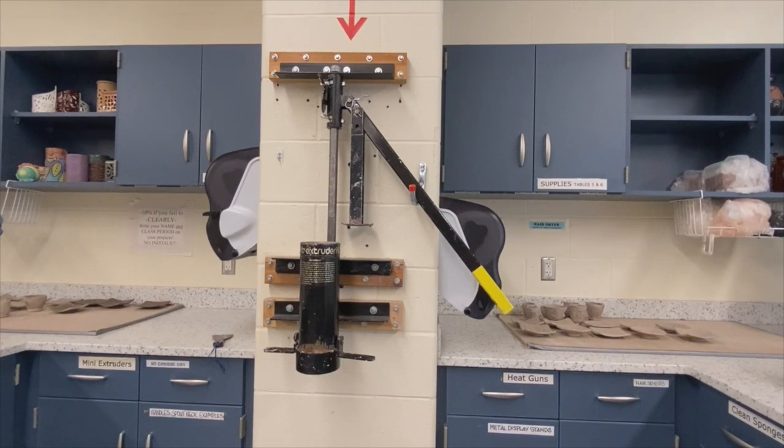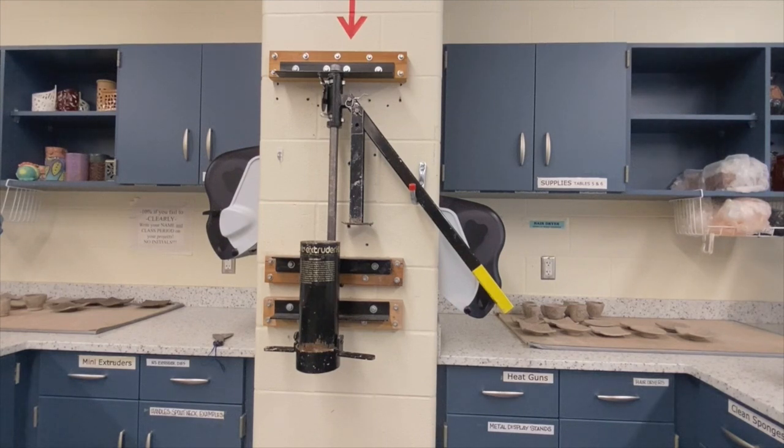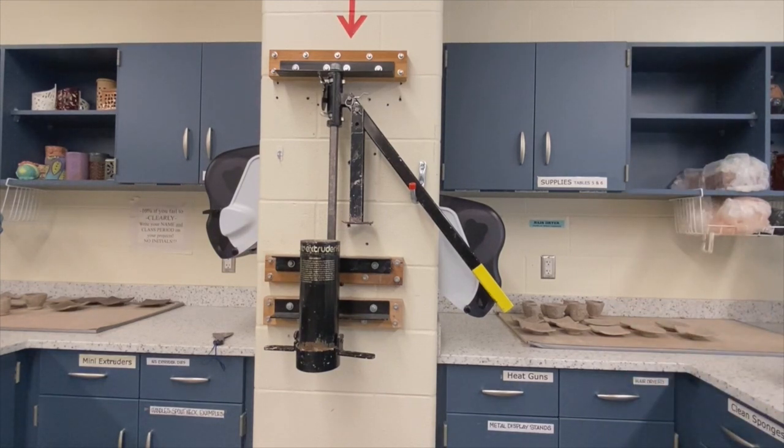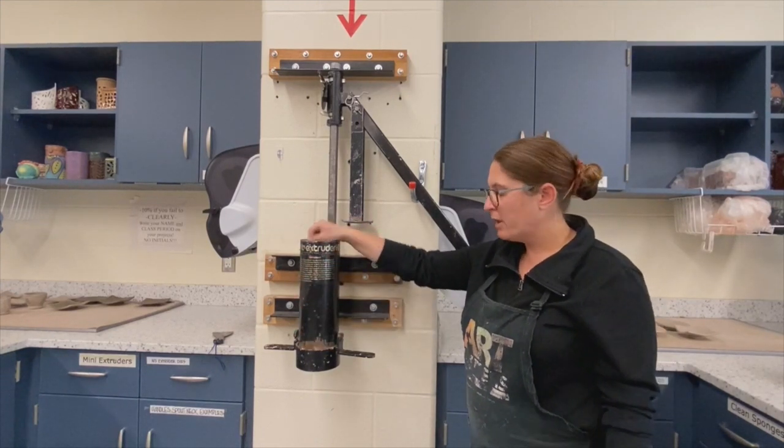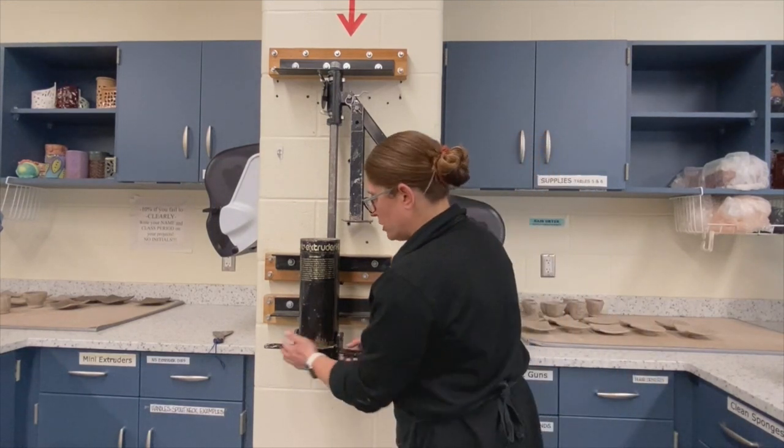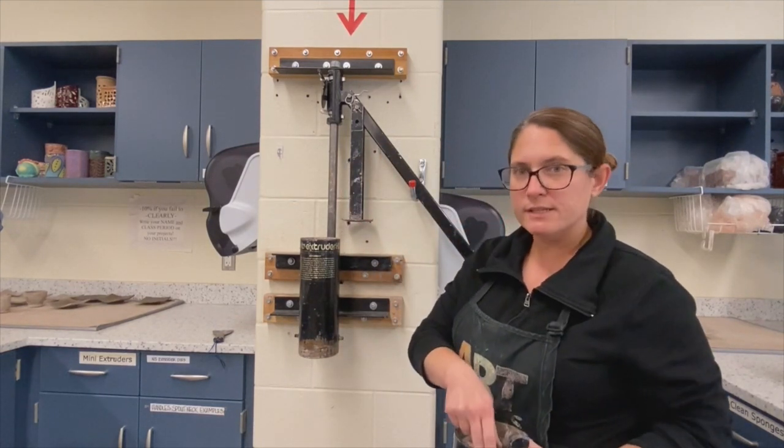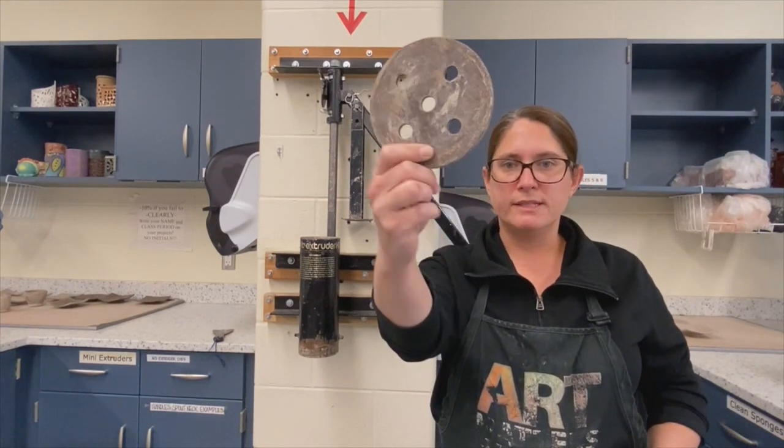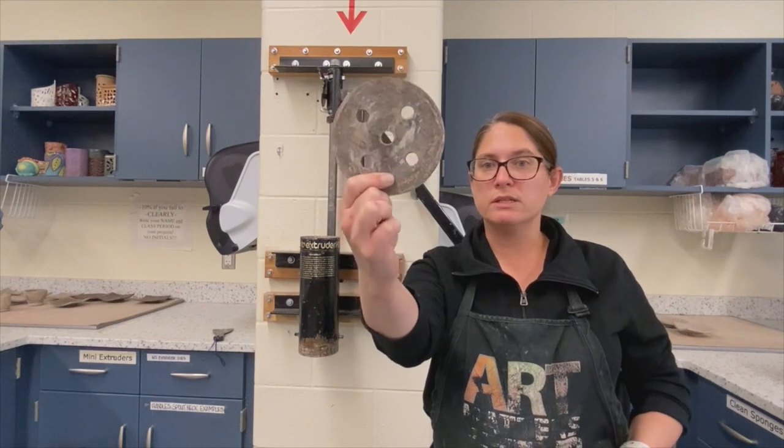This is the extruder. I'm going to go over the different parts to the extruder before I show you how to use it. When you come into the classroom, it should look like it does right now. This cylinder right here is where the clay is going to go into. At the bottom is where the die cut pieces go. So I'm just going to undo this. This just kind of snaps into place, it just twists on, and then there is a metal disc in here that has some circles that have been cut through, and we call that a die cut.